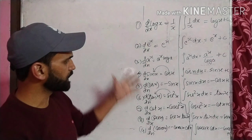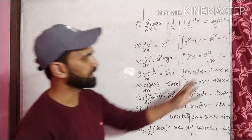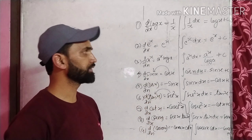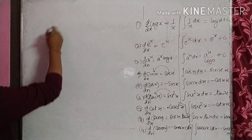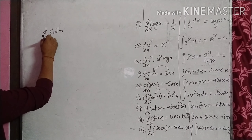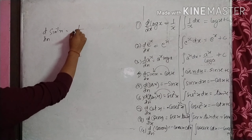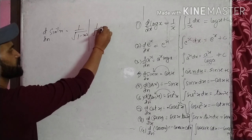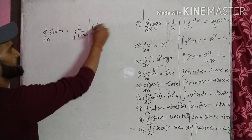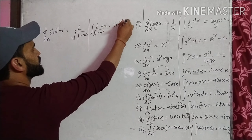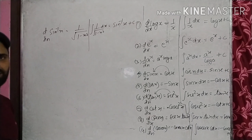यह कुछ formulas हैं जहाँ पर हम differentiation के basis पर directly integration find out कर सकते हैं। अब inverse trigonometric functions के लिए भी formula है। sin inverse x का derivative है one upon under the root one minus x square, तो integration of one upon √(1 - x²) dx will be sin inverse x plus c.